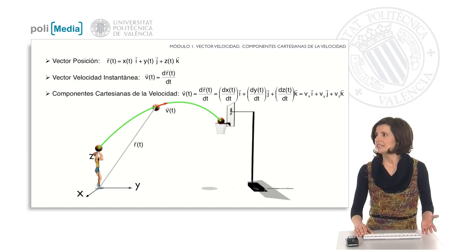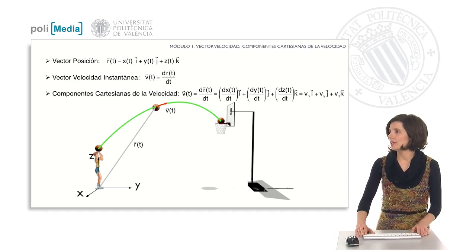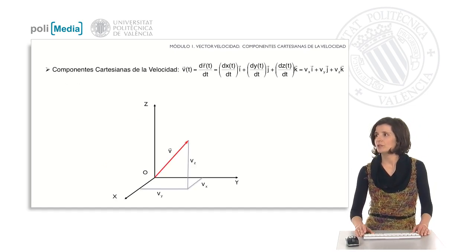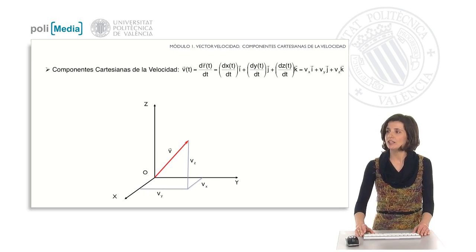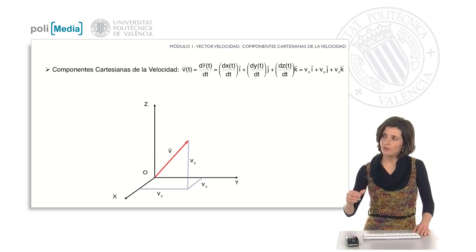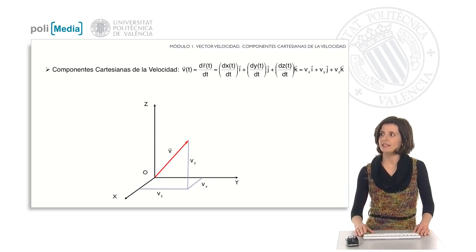If we call these components Vx, Vy, and Vz, these components are the projections of the velocity vector on each of the Cartesian axes.